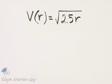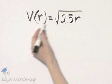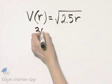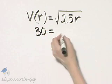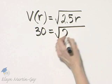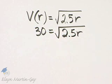Let's use this given function, and we want to find the radius of curvature, so we want to find r if the safe velocity is 30 miles per hour. Remember, this is velocity, so here we'll replace that with 30, and we have 30 is equal to the square root of 2.5r.